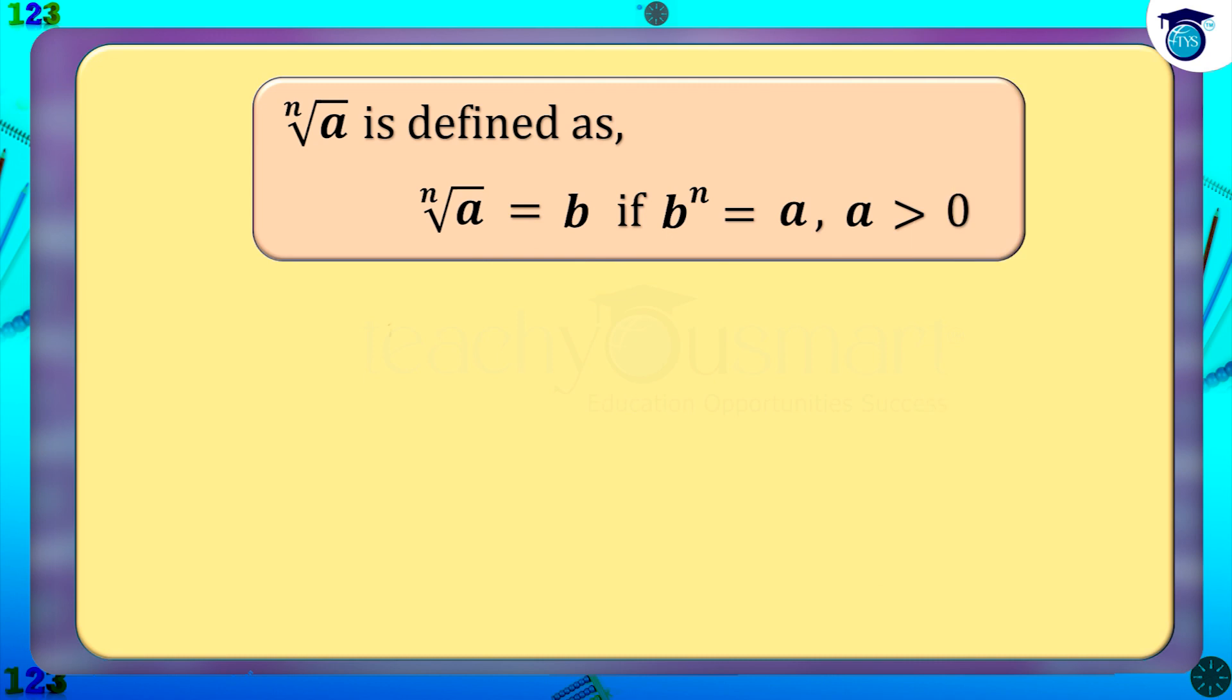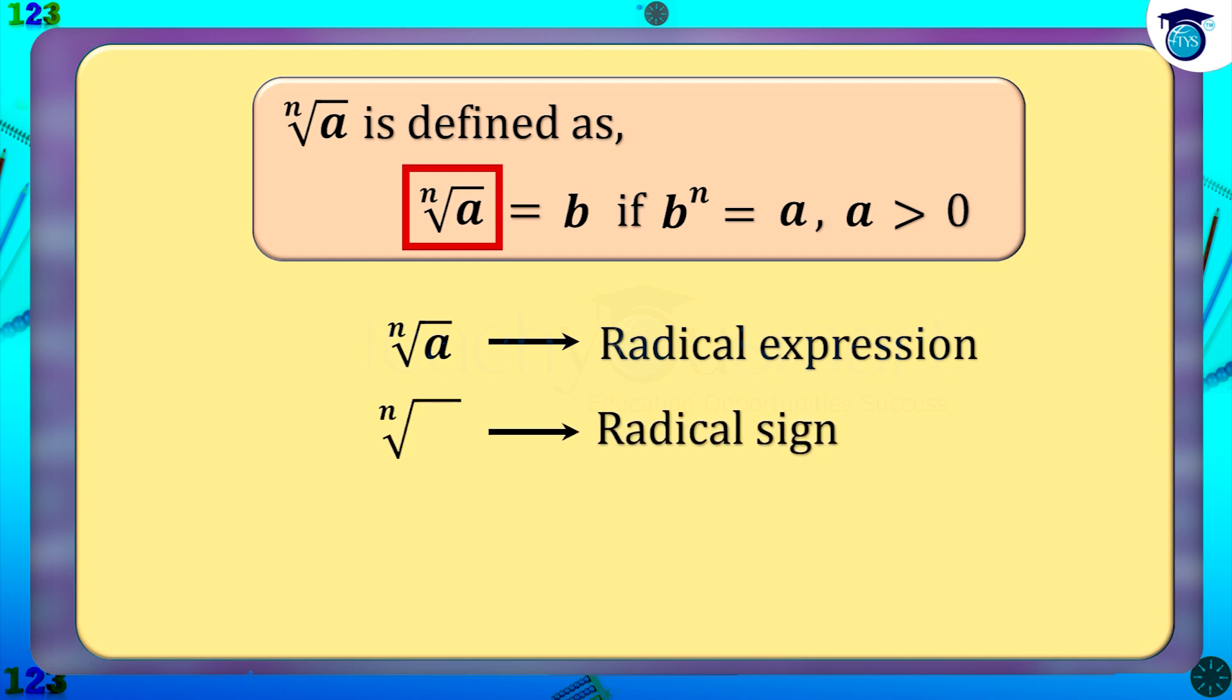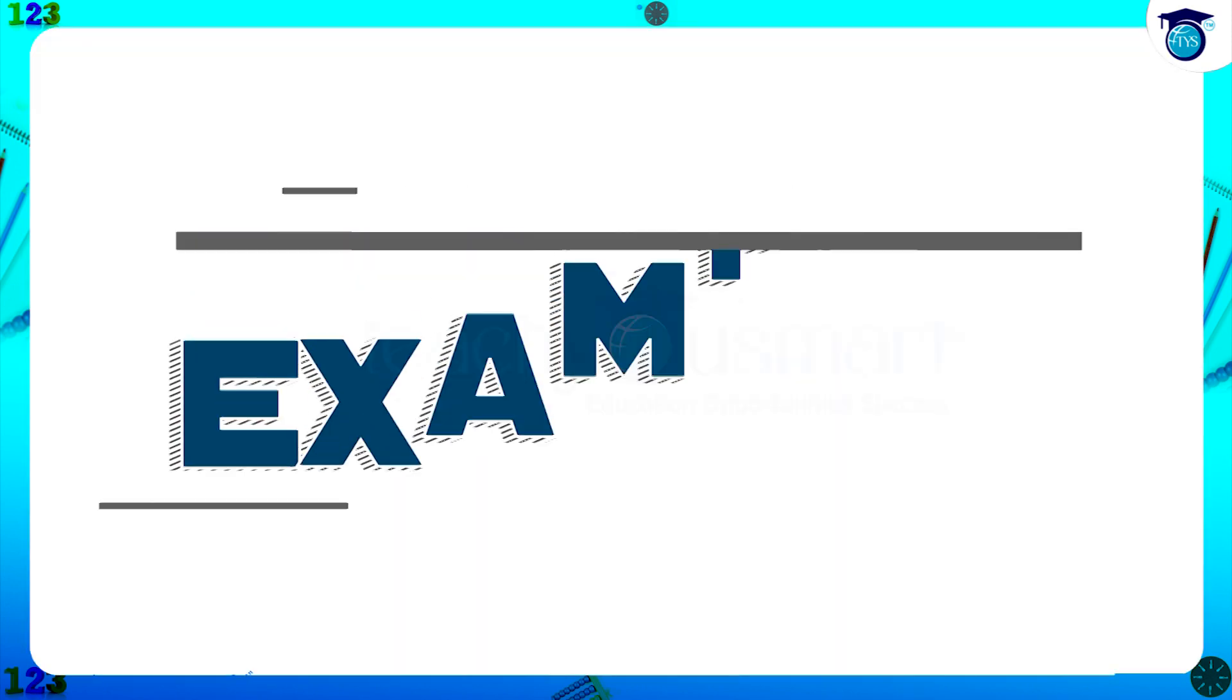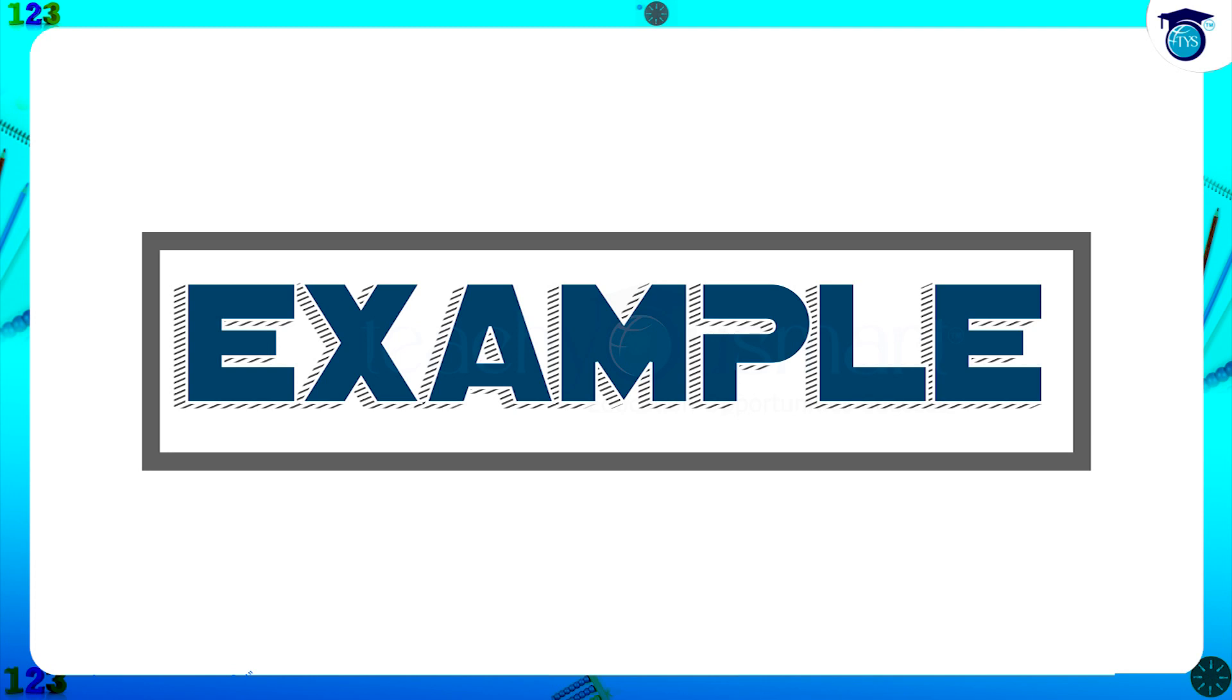In this expression, nth root of a is known as a radical expression, and the sign nth root is called the radical sign. The number under the radical sign, that is a, is called the radicand, and n is the order of the radicand. Let's see some more examples.